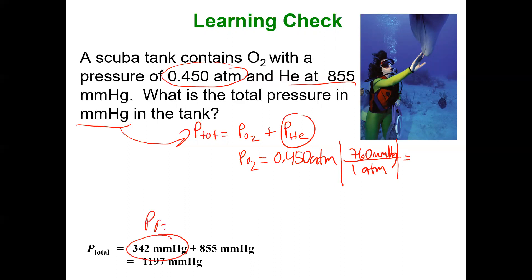The significant figures are correct because in the 0.450 there's three sig figs, because that trailing zero counts. So my final answer had three sig figs. But when I use the rules of addition and subtraction, 855 plus 342 means my final answer has to go to the ones place. So 1197 ends in the ones place. That is the correct amount of sig figs via following the rules for addition and subtraction.